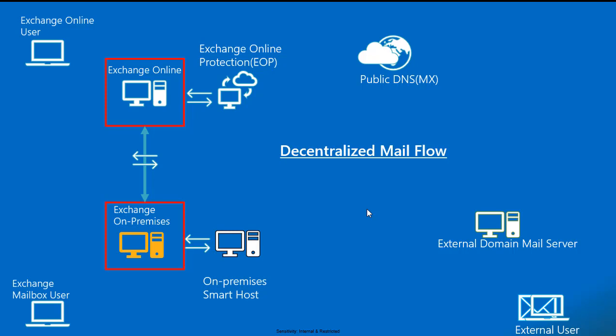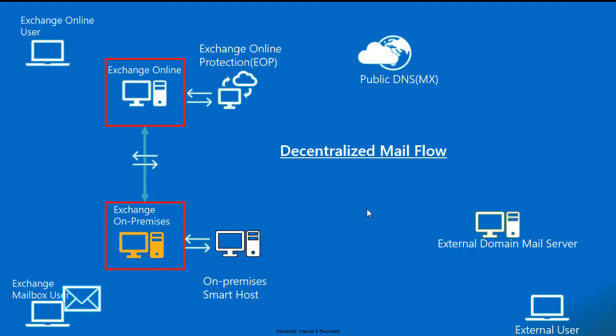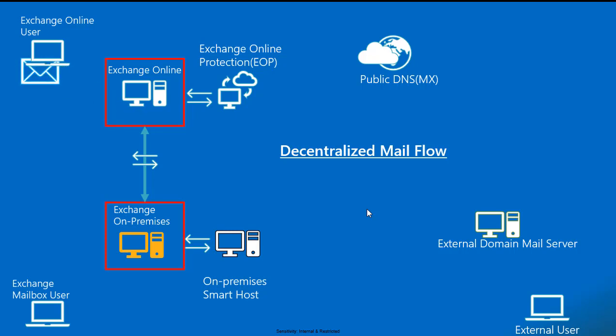In decentralized mail flow, when mail is sent from an external mail server, after MX record validation it is delivered to Exchange Online Protection, which performs the same scanning — anti-malware, connection filter, and transport checks. When it detects decentralized mail flow, on-premises mails are delivered to the smart host, which delivers to internal transport servers and the Exchange mailbox user. When the mail is for an Exchange Online user, it is sent directly to Exchange Online servers and delivered to the appropriate mailbox.